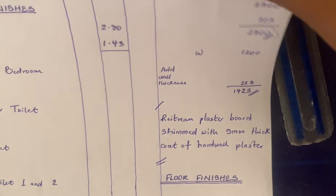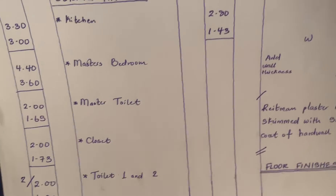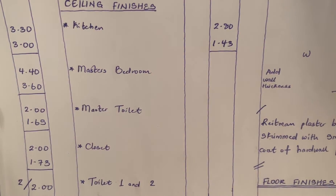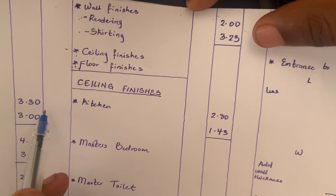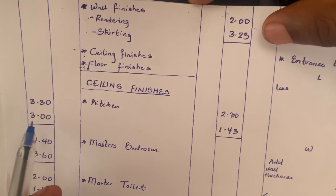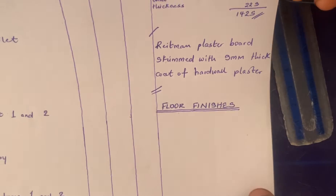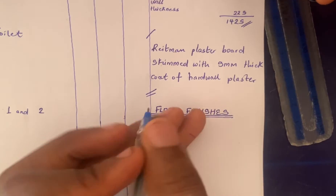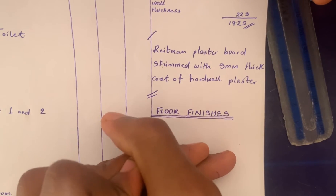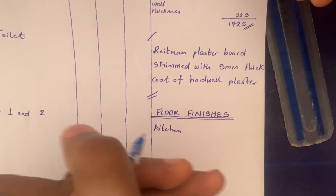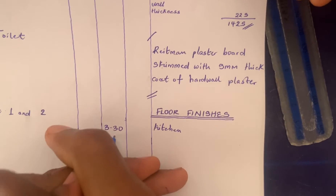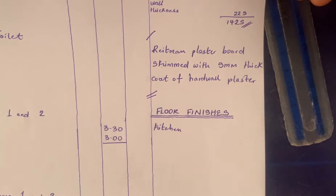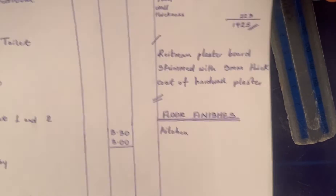We are standing on the basis that what we've calculated here is all correct. So now we will start with number one: the kitchen. We said that the dimension is 3.30 by 3.00, so we will book 3.30 by 3.00.